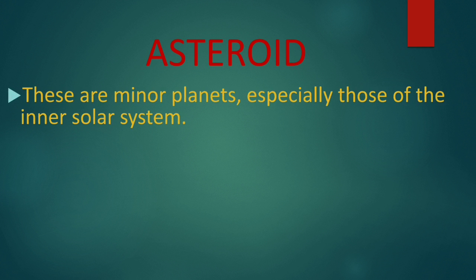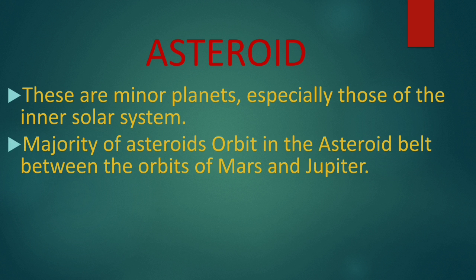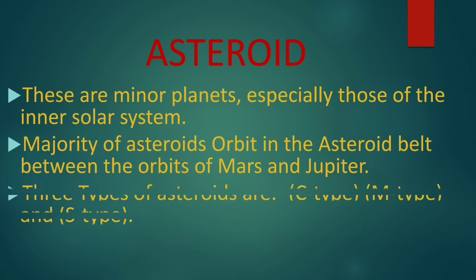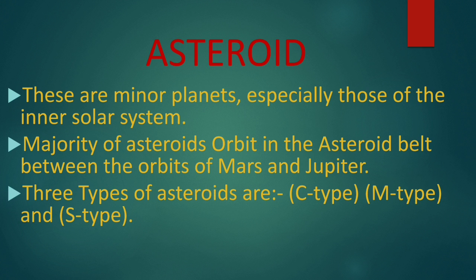First, let's take our first topic: asteroids. International Asteroid Day is celebrated on 30th June every year to educate the people about asteroids. Asteroids are the minor planets, especially those of the inner solar system. The majority of asteroids orbit in the asteroid belt between the orbits of Mars and Jupiter. There are three major types of asteroids: C-type, which are rich in carbon;